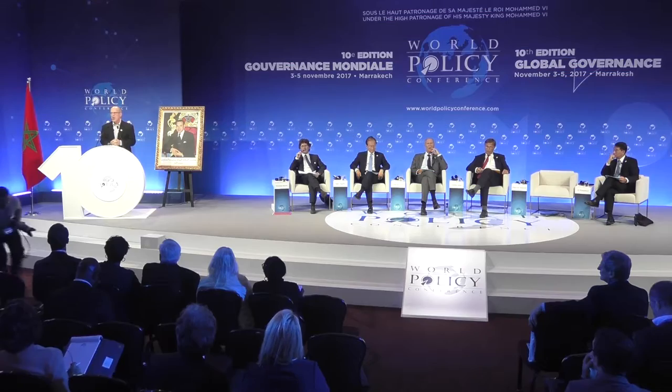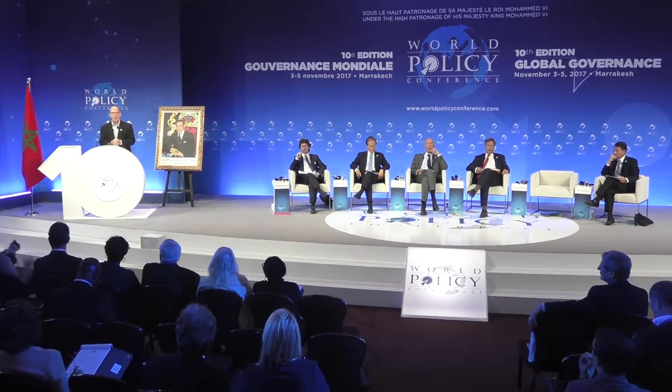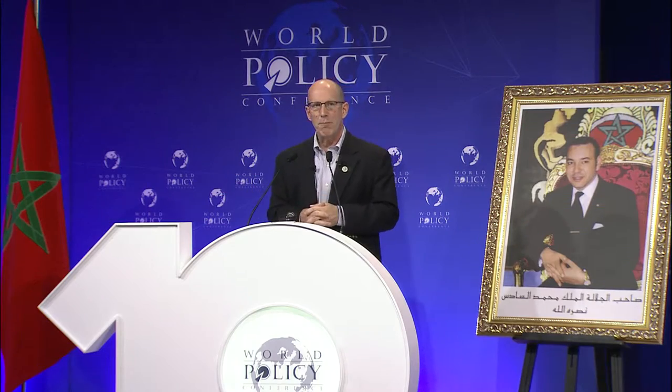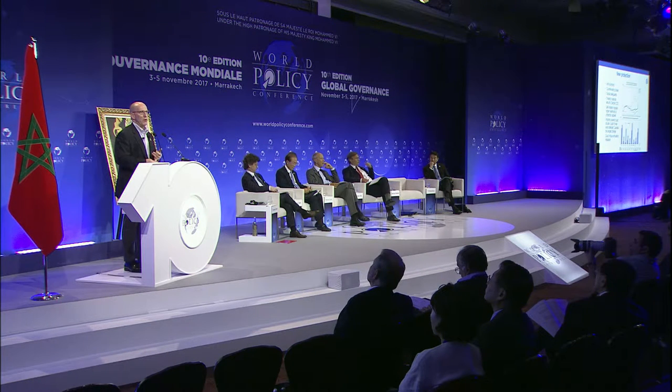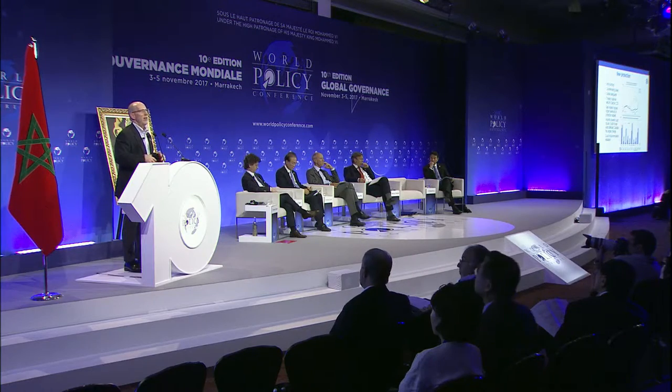If you simply take the cases from the first hundred days of the Trump administration and assume — and this is an assumption — that protection is actually applied, as you can see in the upper panel, the share of U.S. imports under protection doubles. And you see in the lower panel it breaks down by country. South Korea would be the worst affected. The problem for a country like South Korea is that while some of these policies are aimed at China, South Korea produces products such as solar panels, steel, and washing machines that get caught up. South Korea is essentially collateral damage.